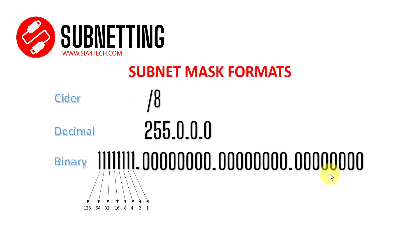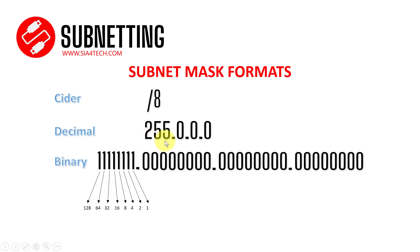Before we get started, I'd like to have a quick review about subnet mask formats because we will need it in this video. In most cases the subnet mask is given in CIDR format, written like /8, /10, /12, /24, etc. Sometimes you have a decimal format, which is very common. The third format is binary. Each subnet mask consists of four octets, and each octet consists of eight bits. If all the bits are on, you have 255 in decimal.